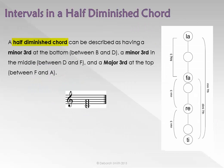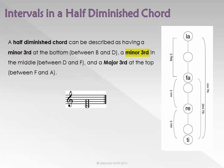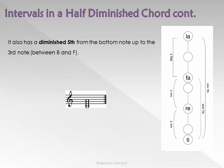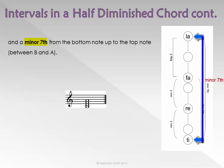A half diminished chord can be described as having a minor third at the bottom — in this chord, it would be between B and D — a minor third in the middle, between D and F, and a major third at the top, between F and A. It also has a diminished fifth from the bottom note up to the third note, between B and F, and a minor seventh from the bottom note up to the top note, between B and A.